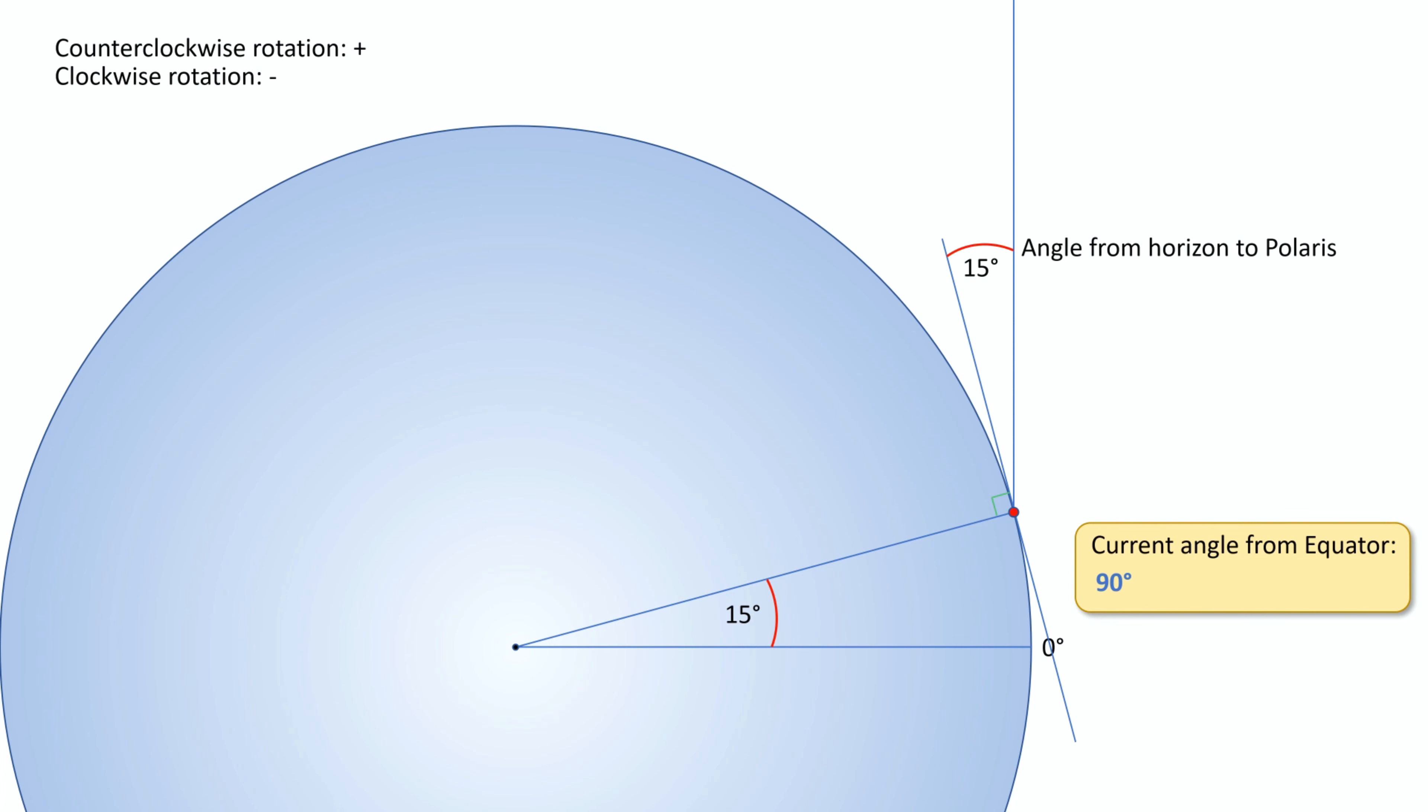which means we are now pointing due north. So if you can find something that's due north, and measure the angle up to it, then that is the same as the latitude you are located at, if the Earth is a ball.